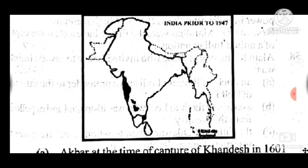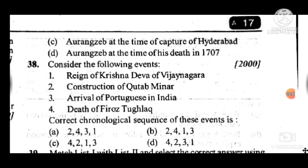Question 38: Consider the following events in correct chronological order. Answer is A — 2, 4, 3, 1: first construction of Qutb Minar, then death of Ghiyasuddin Tughlaq, then arrival of Portuguese in India, and last the reign of Krishna Devaraya at Vijayanagara.